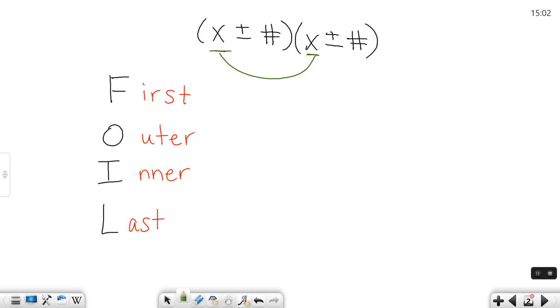O stands for the outer terms, which are basically on the ends, the beginning and end of your binomials. It's going to be this term and that term. I stands for the inner or really the middle terms, which are going to be this one and this one. And L stands for the last term. It's the ones that are in the back end of each of your binomials. So this number and this number.